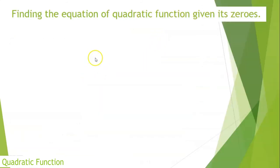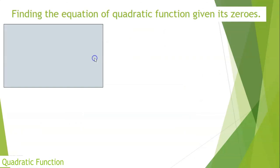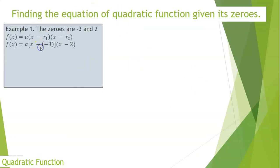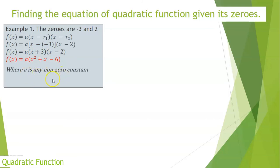At this point, the zeros are given — let's identify the quadratic function. If the zeros are −3 and 2, then the factors are (x − (−3))(x − 2) = (x + 3)(x − 2) = x² + x − 6. So the quadratic function is y = a(x² + x − 6) where a is any non-zero constant.